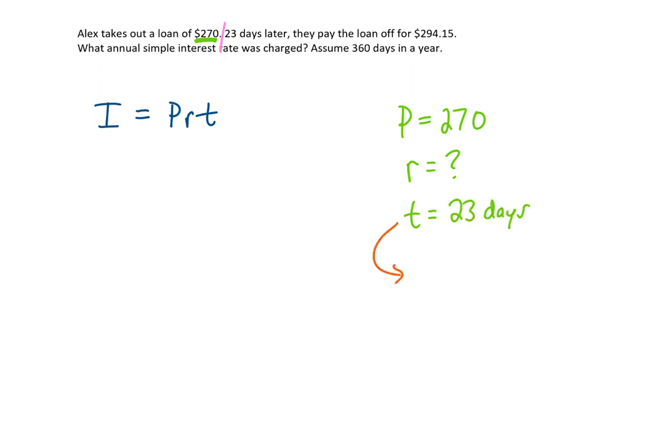The amount of time that this loan was taken out for was 23 days. Note that we're going to have to convert this into years because we're looking for the annual simple interest rate. Using the assumption that we have 360 days in a year, that's the banker's rule, 23 days is going to be the same thing as 23 over 360 years. That's the time we're going to plug into this formula. We need one more thing. We need the interest that was paid on this loan.